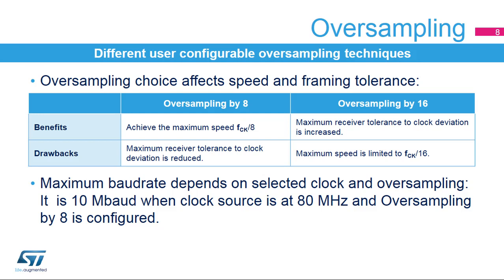The USART receiver implements different user-configurable oversampling techniques for data recovery by discriminating between valid incoming data and noise. This allows a trade-off between the maximum communication speed and noise clock inaccuracy immunity. Select oversampling by 8 to achieve higher speed, up to FCLK divided by 8, where FCLK is the USART clock source frequency. In this case, the maximum receiver tolerance to clock deviation is reduced.